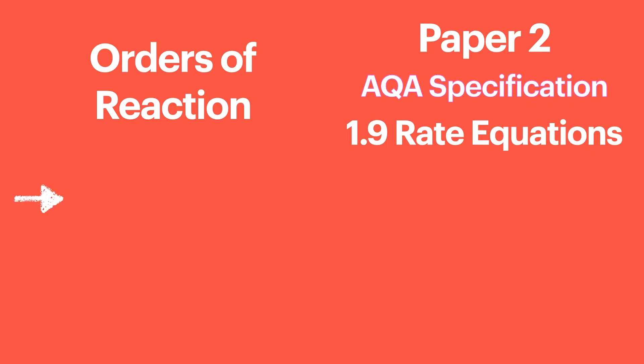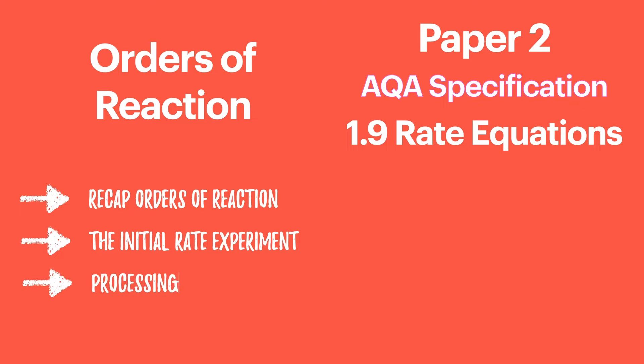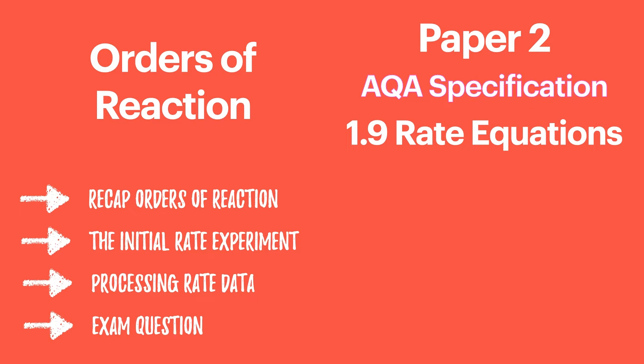In this episode I'm going to quickly recap the orders of reaction that we learned about in the previous video. Then I'm going to explain how we set up an initial rate experiment to generate the data. We're going to move on to look at how we process the data once you've collected it and we'll finish with an exam style problem. Remember to watch through to the end where I'm going to give you the key points that you need to write down for your revision in this topic.